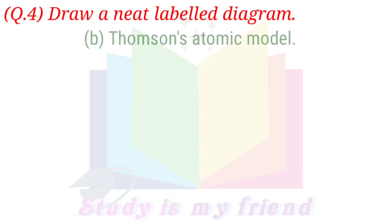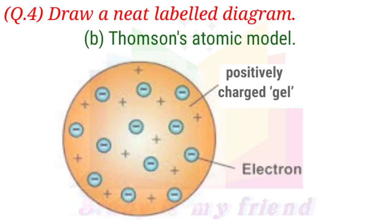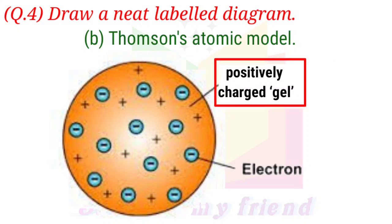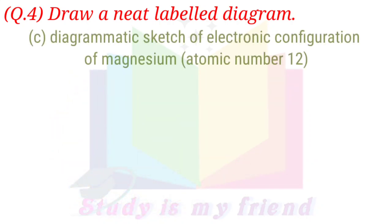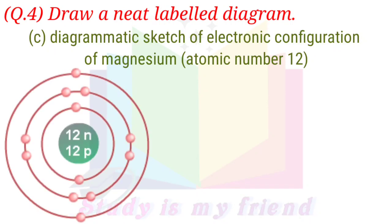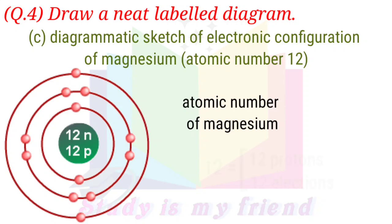Part B: Thompson's atomic model showing positively charged gel with electrons. Part C: Diagrammatic sketch of electronic configuration of magnesium, atomic number 12. Answer: Atomic number of magnesium 12 equals 12 protons and 12 electrons.